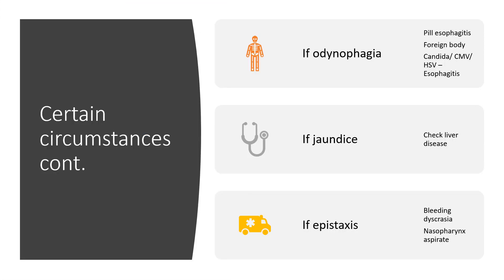If we are dealing with odynophagia — that is painful swallowing — then we should rule out pill esophagitis, foreign body, candidiasis, cytomegalovirus, and herpes simplex virus esophagitis. And if we are noting jaundice, then we should check out for liver disease. If we are battling with epistaxis and now hematemesis, we should rule out bleeding dyscrasia and nasopharyngeal aspirate.